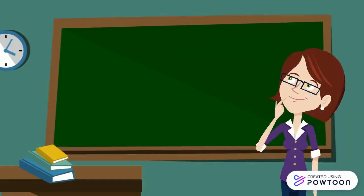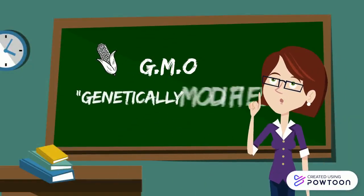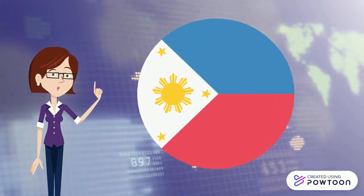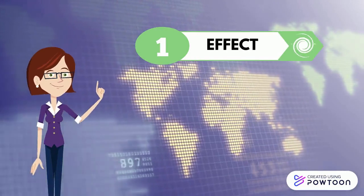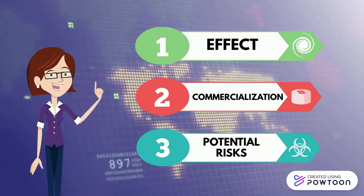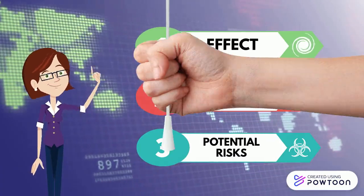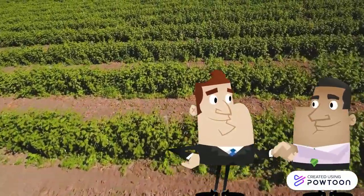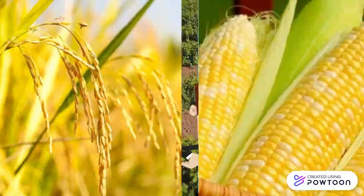An example of this is the issue on GMO or genetically modified organisms. GMO crops are prominent in the country and most of their issues are rooted in their effect, commercialization, and potential risks to the agricultural society. We'll focus on the means of introducing GMO crops to the involved sectors by examining the golden rice and the BT corn.